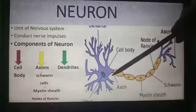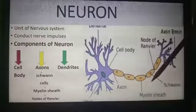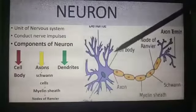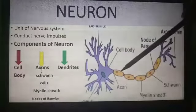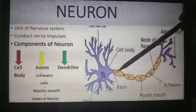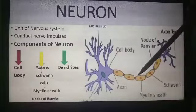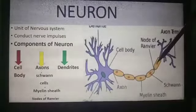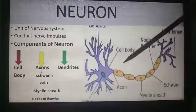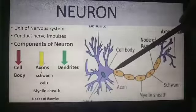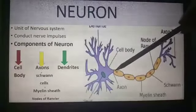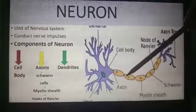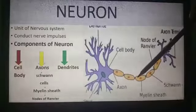The process which carries impulses away from the cell body is called the axon. Along the axon, at regular intervals, some specialized cells are present called Schwann cells.